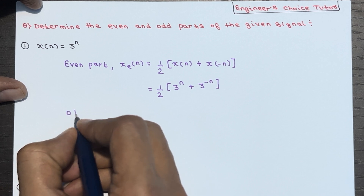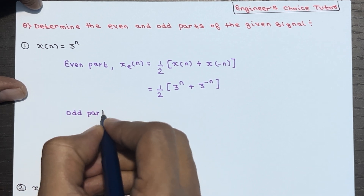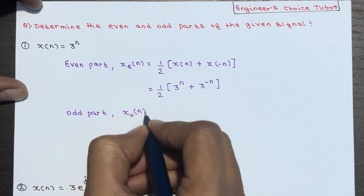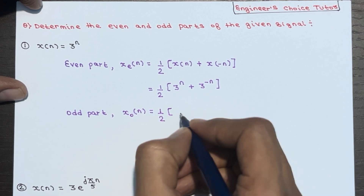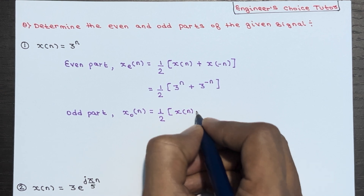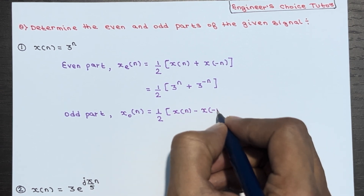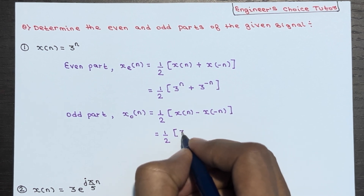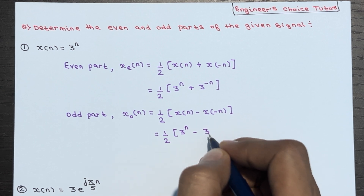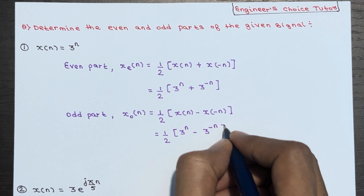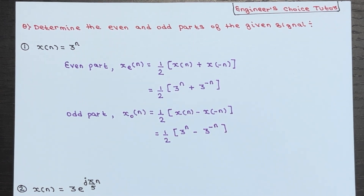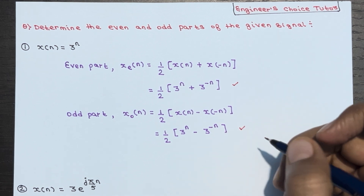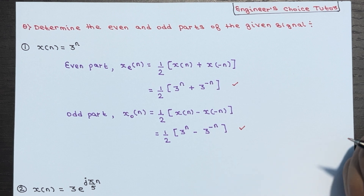Now let's calculate the odd part. The odd part x_odd of n is equal to (1/2)[x(n) - x(-n)]. So this becomes (1/2)[3^n - 3^(-n)]. So to summarize: the even part for x(n) = 3^n is (1/2)[3^n + 3^(-n)], and the odd part for x(n) = 3^n is (1/2)[3^n - 3^(-n)].